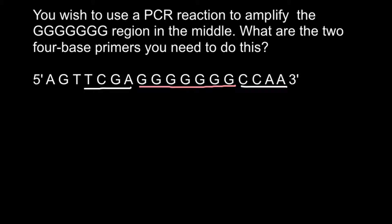In order to solve this problem you have to know that a DNA strand grows from the 5' end to the 3' end direction, and also that adenine base pairs with thymine and guanine base pairs with cytosine. So let's build our first primer. Because DNA strands are antiparallel, we would have the 5' end here and the 3' end here.